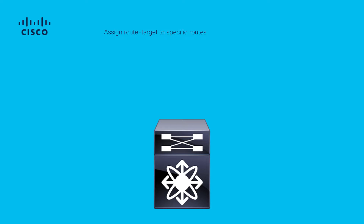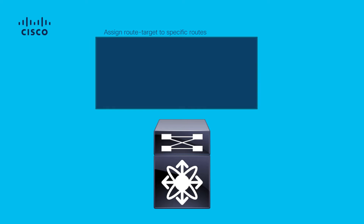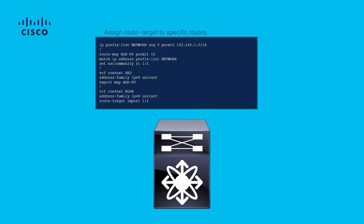You can optionally use the export map command under the origin VRF in order to assign a route target to specific routes to be exported. Use the extcommunity-rt parameter in the route-map in order to assign the route target. In this example, only network 192.168.1.0/24 is exported with route target 1:1, which is later imported in VRF blue. The result is that only the specified network is leaked.